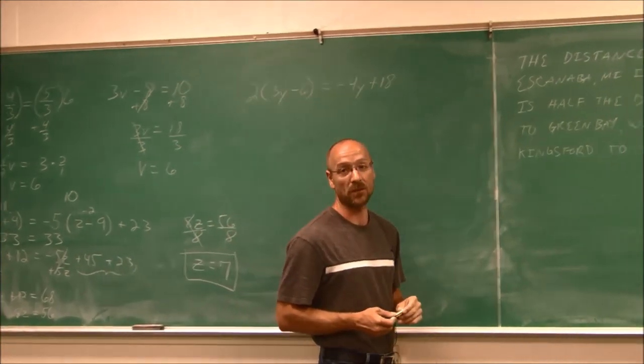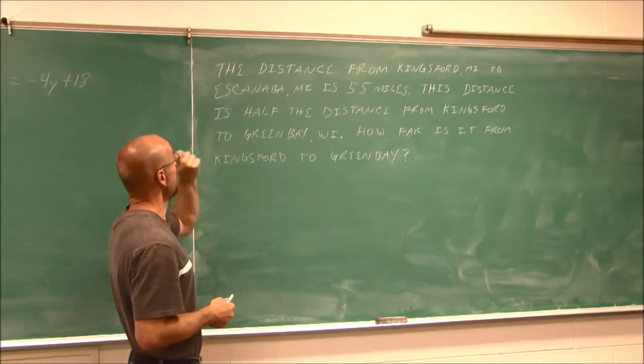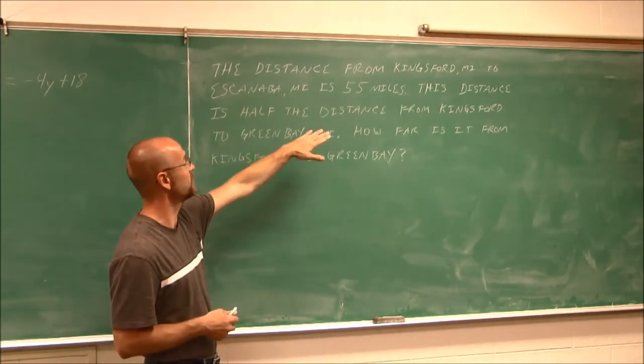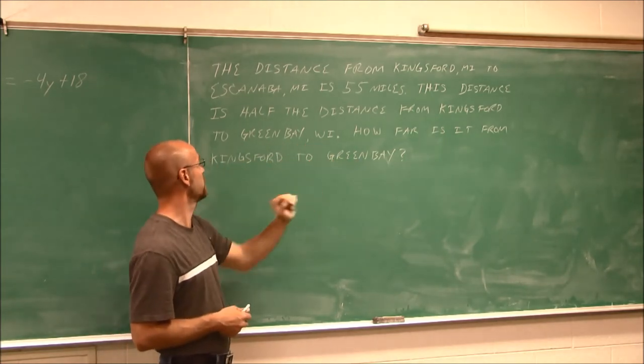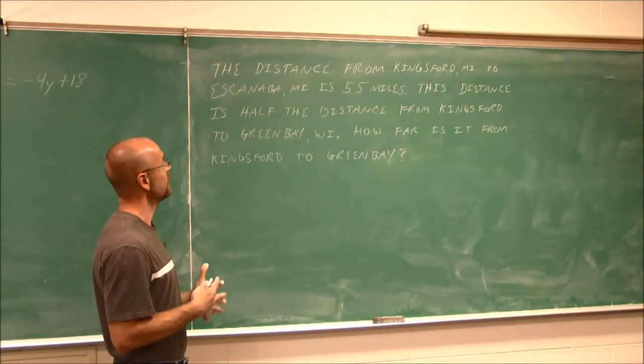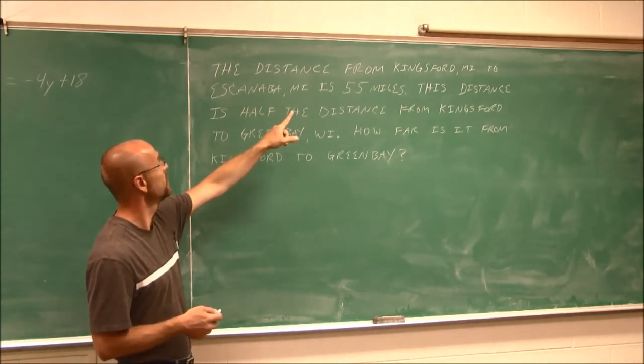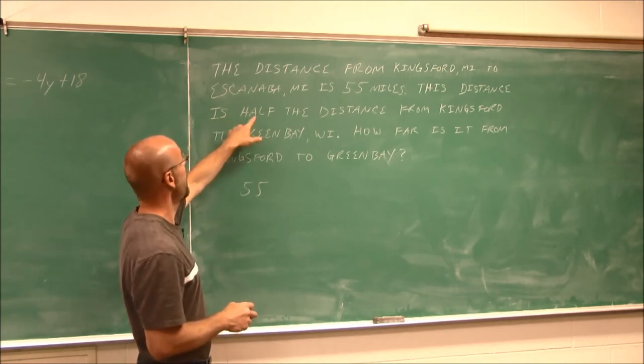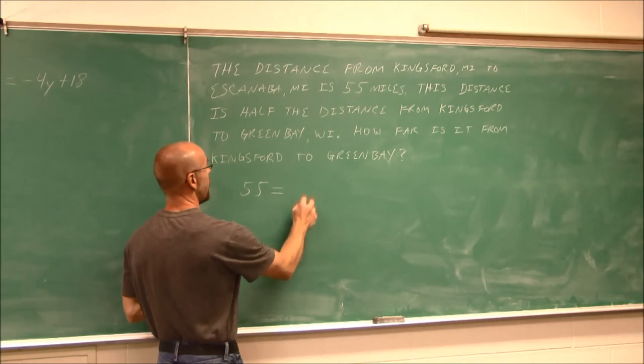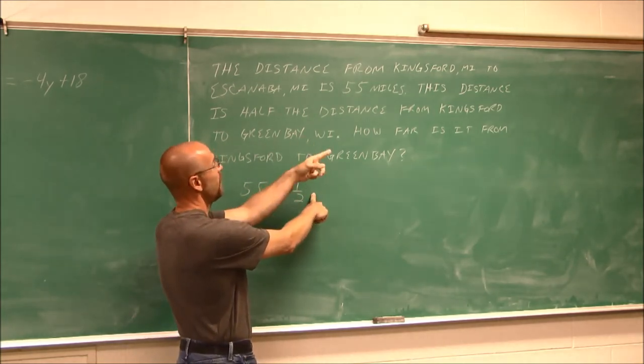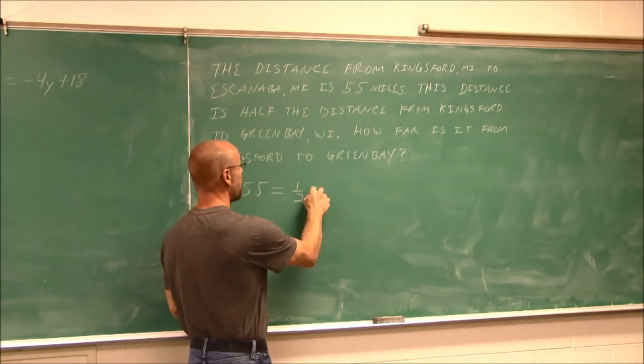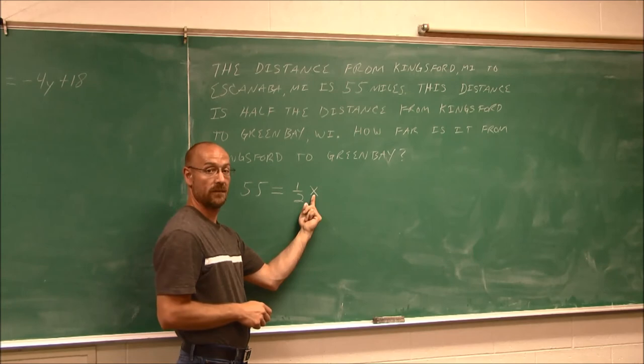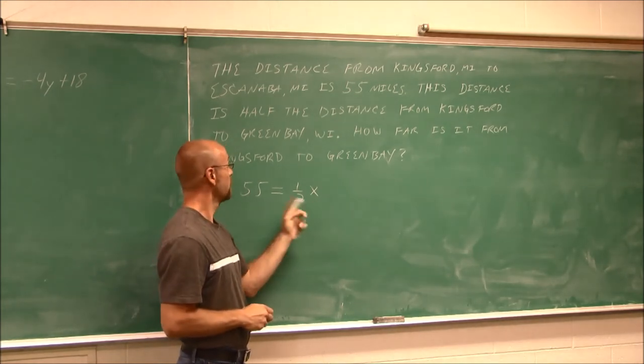We're going to look at an application problem where we have to solve an equation. The example is the distance from Kingsford, Michigan to Escanaba, Michigan is 55 miles. This distance is half the distance from Kingsford to Green Bay, Wisconsin. How far is it from Kingsford to Green Bay? So let's assess. What are we told? We're told that the distance from Kingsford to Escanaba is 55 miles. This distance, 55 miles, is half the distance from Kingsford to Green Bay. How far is it from Kingsford to Green Bay? That's what we don't know. That's what I'm going to assign the variable. So if I read this, 55 miles is half the distance that we're looking for from Kingsford to Green Bay.